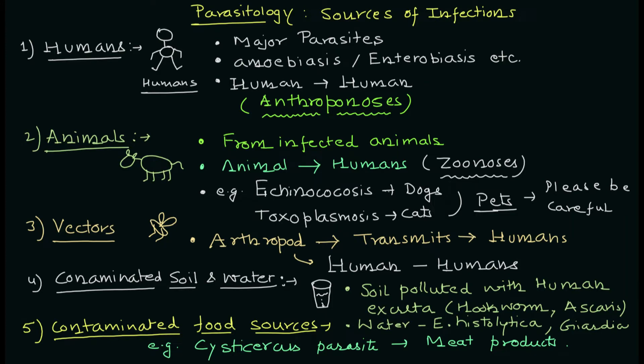We will discuss humans, animals, vectors, contaminated soil and water, and contaminated food sources — specifically meat products. We will discuss what parasites are present in these different sources, why they are important, and what kind of diseases they can cause, all in this particular video lecture.